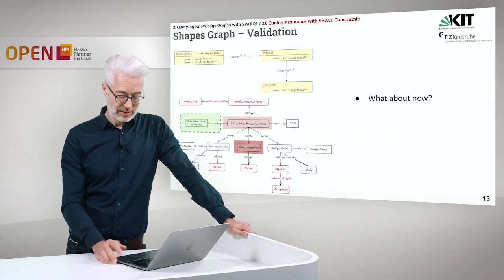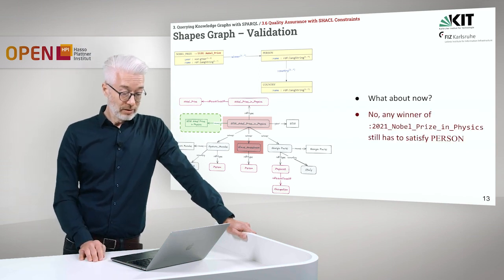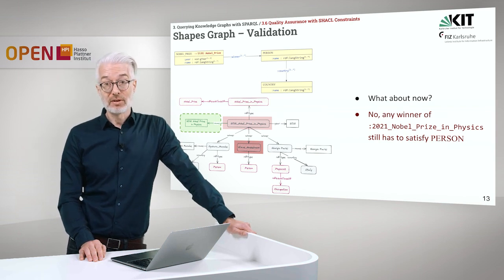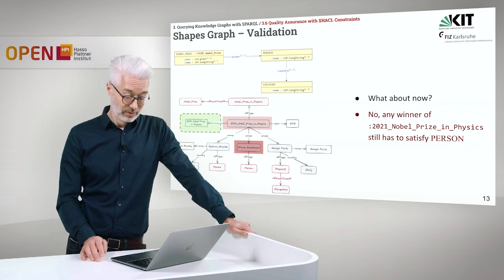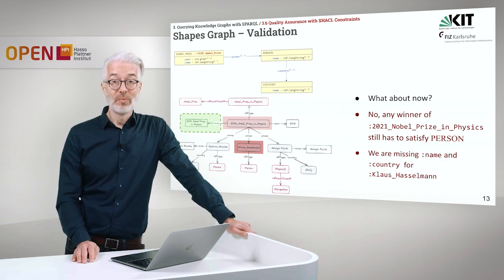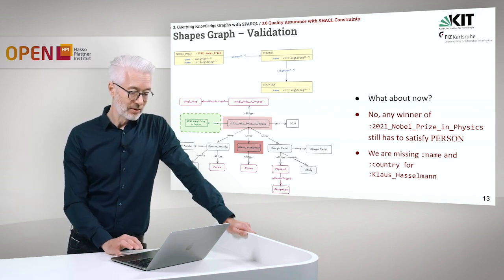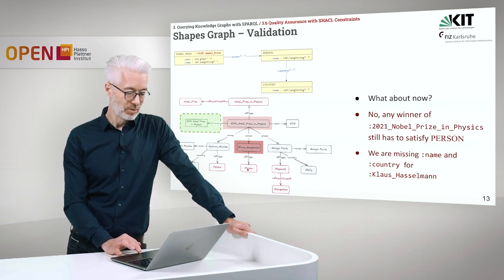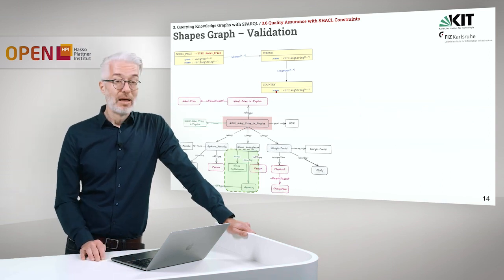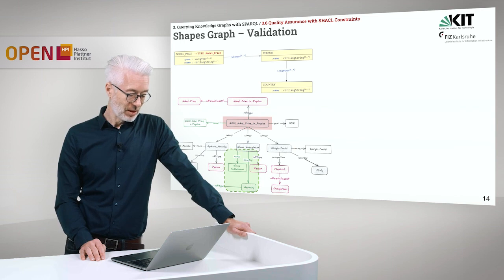Let's try again. Is everything okay now? No. Any winner of the Nobel Prize in Physics still has to satisfy the person shape. You see one of the persons listed in red — exactly the person for whom a name is missing and also the country shape is not satisfied, as he is not connected to a country. Klaus Hasselmann is only of type person, so that fits, but the name for the person is missing and the country is missing. So we have added the name Klaus Hasselmann and added Germany as a country.